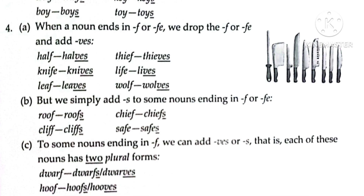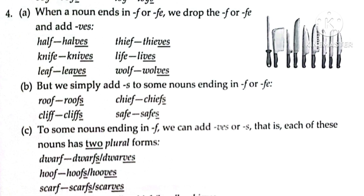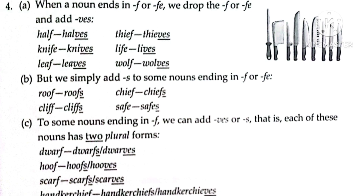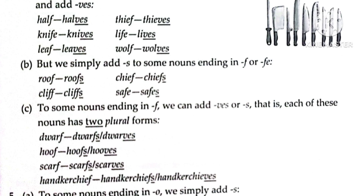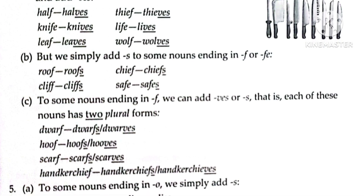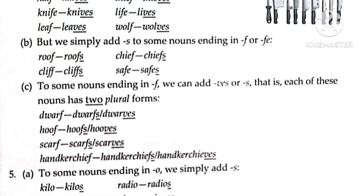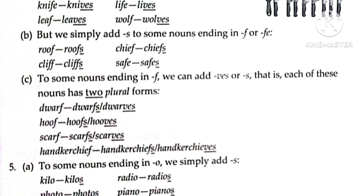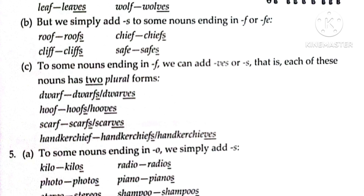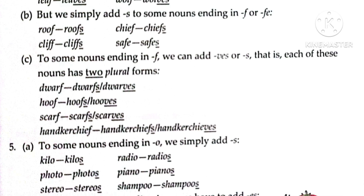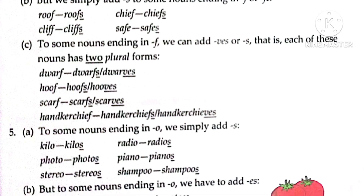Part B: but we simply add S to some nouns ending in F or FE. Examples: roof → roofs, chief → chiefs, cliff → cliffs, safe → safes. Part C: for some nouns ending in F, we can add either VES or S — that is, each of these nouns has two plural forms. For example: dwarf → dwarfs or dwarves, hoof → hoofs or hooves, scarf → scarfs or scarves.